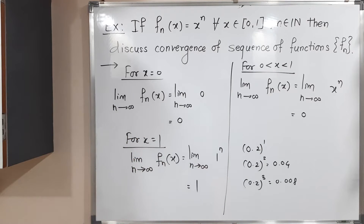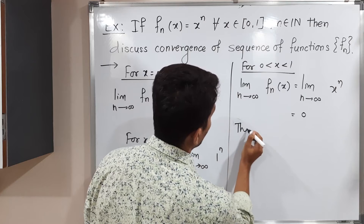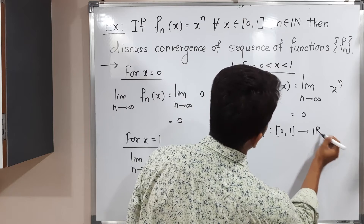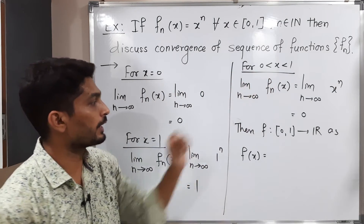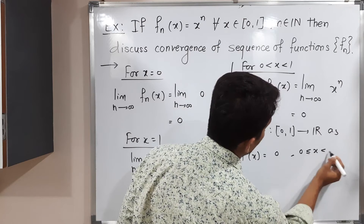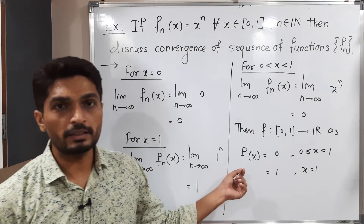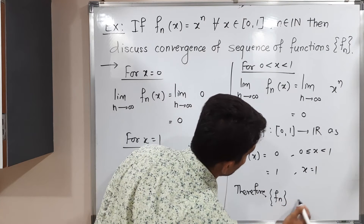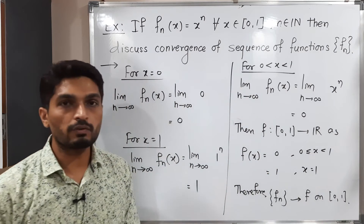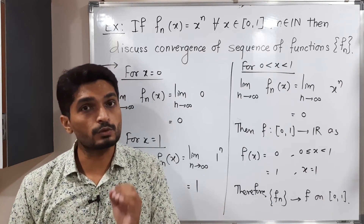For different points we got different values, so let us now define the limit function. We define f : [0,1] → ℝ as f(x) = 0 for 0 ≤ x < 1, and f(x) = 1 for x = 1. Therefore, fn converges to f on the closed interval [0,1]. In this way we found the pointwise limit of the sequence of functions fn. Now we have to check whether that convergence is uniform or not.